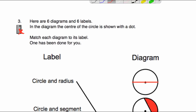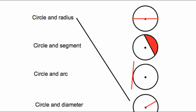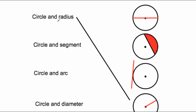Question three gives us six diagrams on the right and six labels on the left. In each diagram, the center of the circle is shown as a dot. We need to match each diagram to its label, and the first one has been done for us. The first label says a circle and a radius — the line going from the center to a point on the circle. The second label says a circle and a segment: we've got a chord, an arc, and the region between them colored in red, which is a segment.